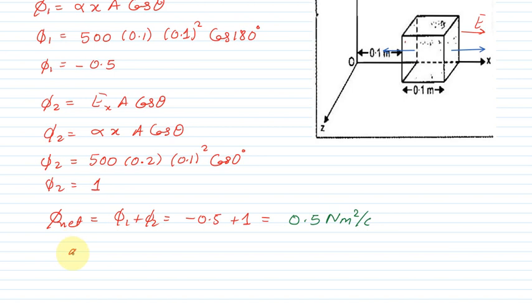The charge enclosed is epsilon not times phi. Epsilon not value is 8.85 into 10 to the power minus 12, times 0.5. After solving this, it will be 4.425 into 10 to the power minus 12. I hope you understand the explanation, thank you.